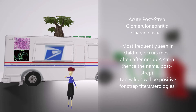Acute post-streptococcal glomerulonephritis is a nephritic syndrome that occurs after group A strep infection of the pharynx or the skin. As the name implies, it's post-streptococcal — it occurs after strep. It can occur after other infections as well, but it's usually after strep infection. That's why lab values will be positive for strep titers and serologies.